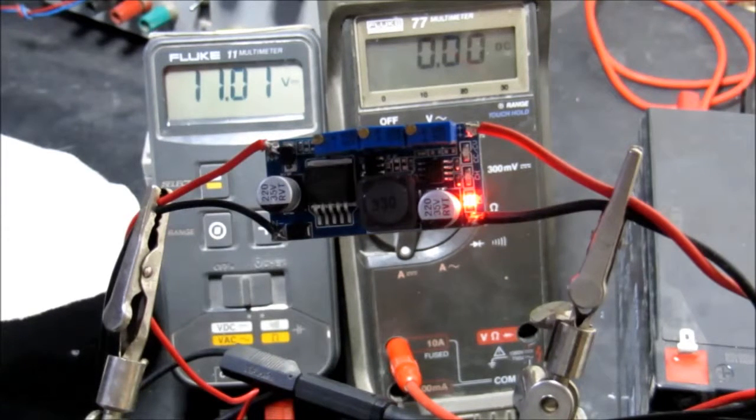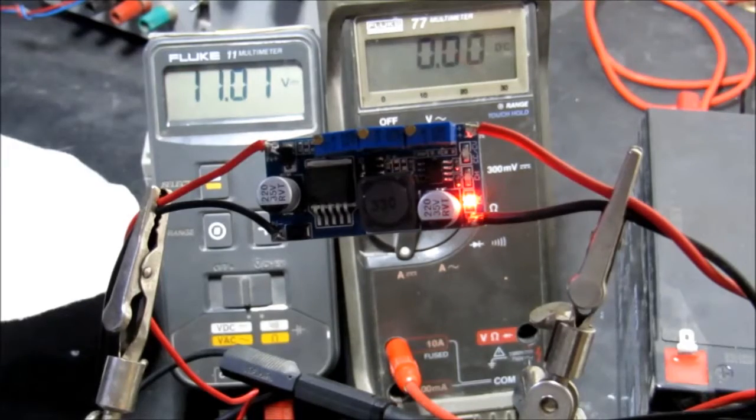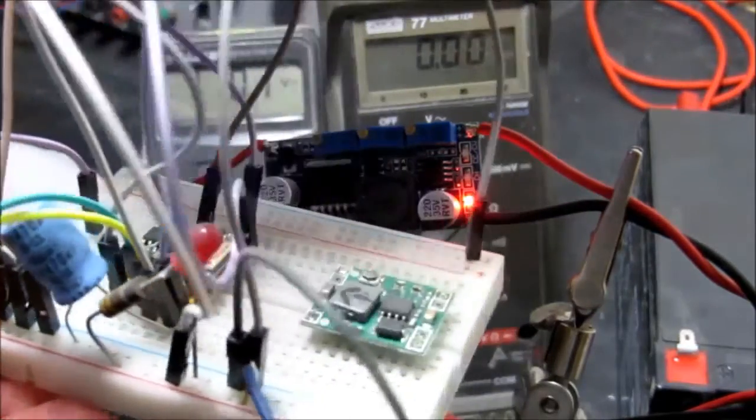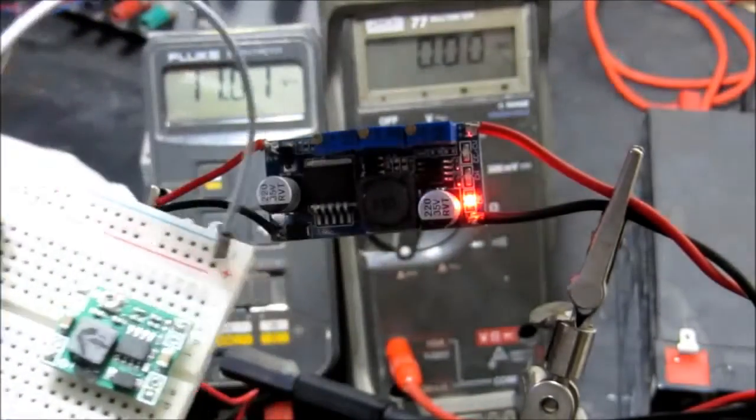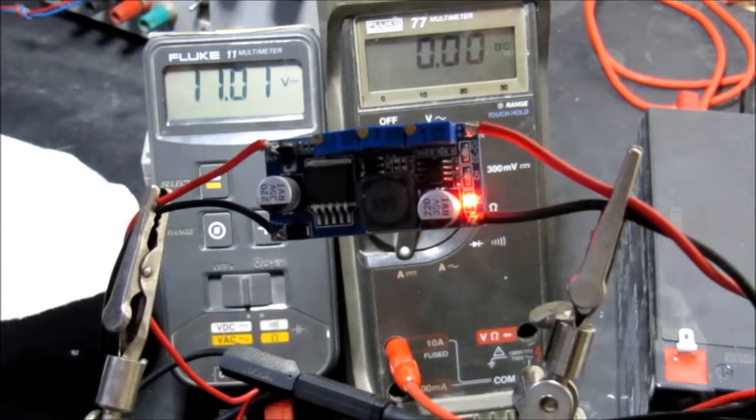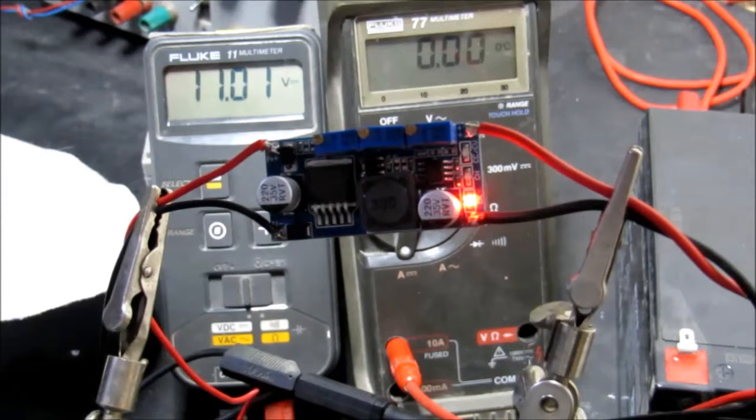These circuits can also be used just as a general purpose regulated voltage with a current limit. This is very useful if you're developing circuits and using one of these type of breadboard arrangements. You can see there's another voltage regulator on there but it doesn't have output current limiting.